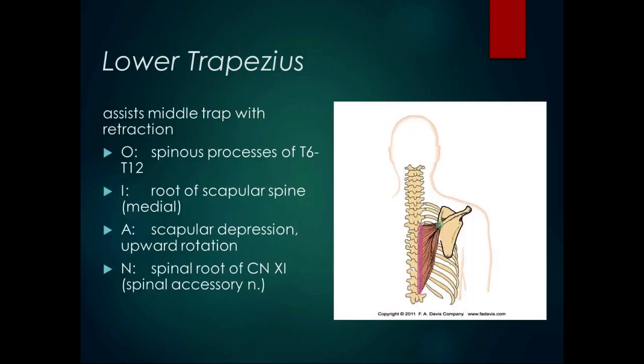The lower trapezius also assists the middle trapezius with retraction because it has horizontal fibers. Its origin is the spinous processes of T6 to T12 — a broad origin. Its insertion is the root of the scapular spine on the medial side of the scapula — a tiny insertion — making it a triangular muscle. It does scapular depression because its fibers pull inferiorly, and it also functions in the force couple for upward rotation. Like all heads of the trapezius, it's innervated by the spinal accessory nerve, cranial nerve 11.